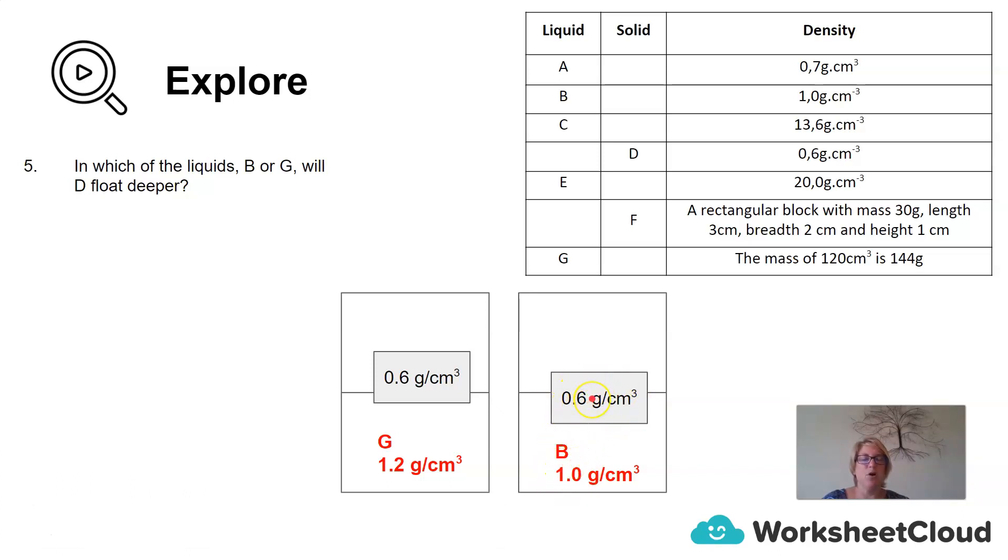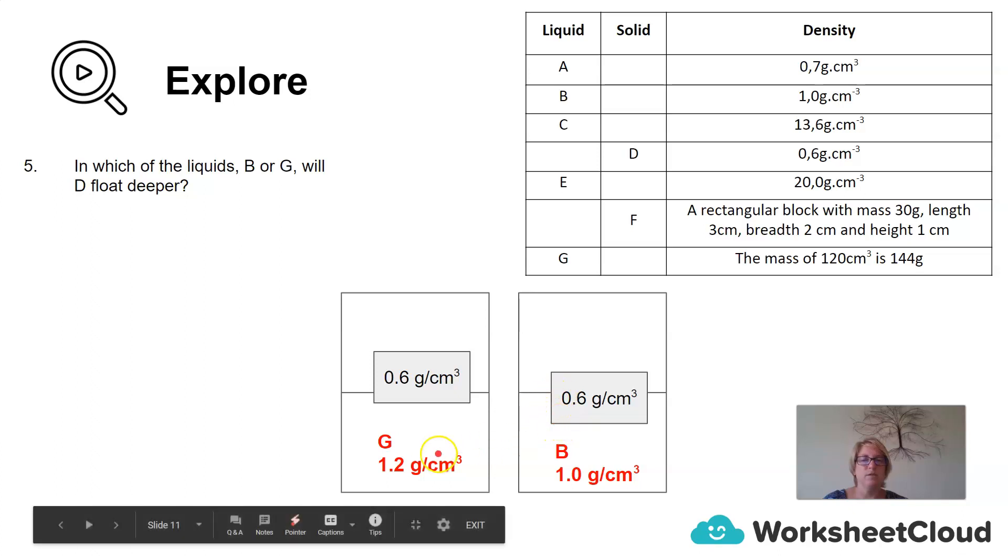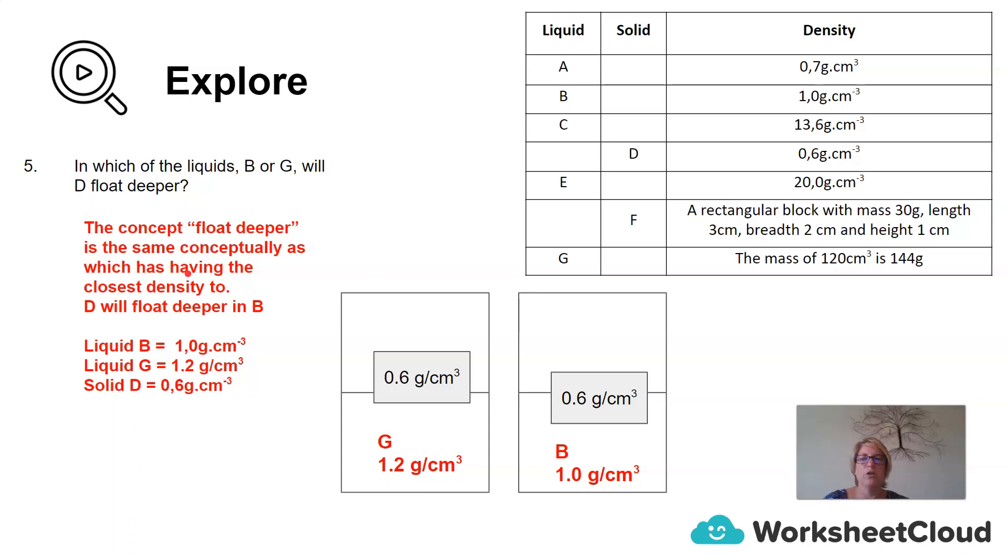If this block was 1.0 grams per centimeter cubed, it would be floating directly on the surface here. But because it is a little bit lighter, some of the block is going to float, be seen on top, and more of the block is going to be seen below the surface. So the concept float deeper is the same conceptually as having the closest density to D, which will float deeper in B. Liquid B is 1 gram per centimeter cubed, liquid G is 1.2 grams per centimeter cubed, and solid D is 0.6 grams per centimeter cubed.